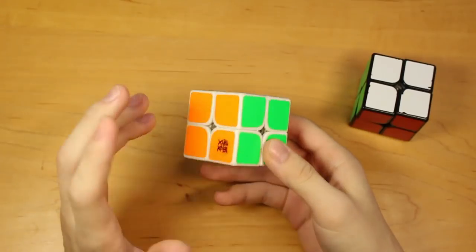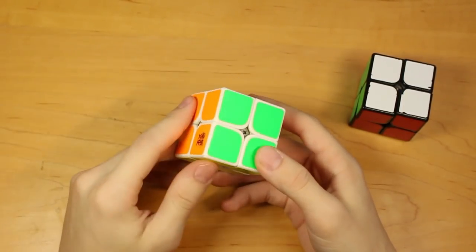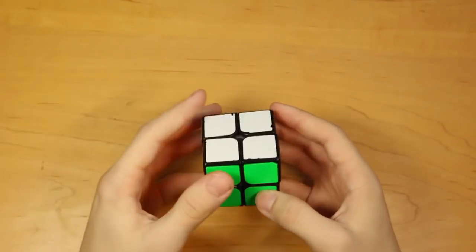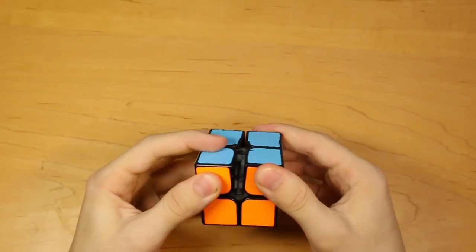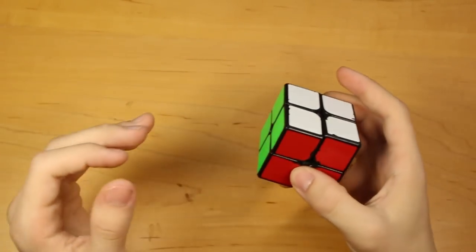And my two Lingpos. This is pretty much my first 2x2 main ever, and it's the one that I started using when I wanted to get competitive in 2x2, so this is what started it all. And this was my main a couple years ago, the Cubicle Premium Lingpo. It has an absurd amount of Lubical Black in it. But it's not good anymore, but it used to be really good.